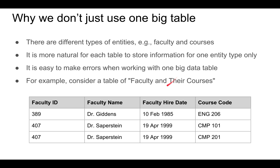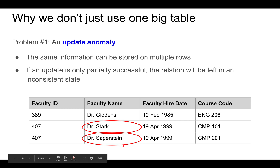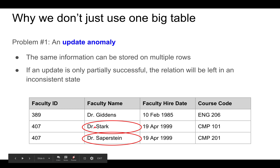For example, let's consider a table of faculty and their courses as shown here. An update anomaly occurs when you try to update the information but only some of the rows are updated. For example, let's say Dr. Seifernstein changes his or her name to Dr. Stark, but only one of the two rows is updated. Then the information in the table is not correct.